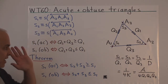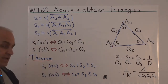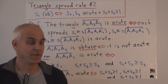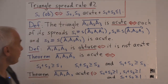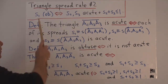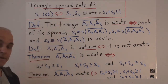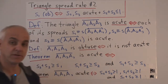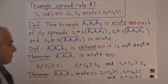Now let's have a look at how the triangle spread rules allow us to rethink these inequalities. There are two triangle spread rules, and the one of interest is the second rule, which tells us that in a triangle with three spreads, the spread S1 is obtuse precisely when the other two spreads S2 and S3 are first of all acute, and secondly, that they sum to something less than or equal to one.